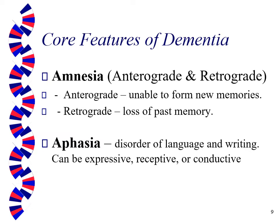The next core feature is aphasia — a disorder of language and writing. Most commonly it's expressive aphasia, but it can also be receptive, where you talk to a patient and they appear to be hearing you, but when they respond you can tell they didn't understand anything you said. Conductive aphasia is more complicated — it means the ability to learn something and then pass it on to someone else, not just learn it yourself. That one is very difficult for people with dementia.